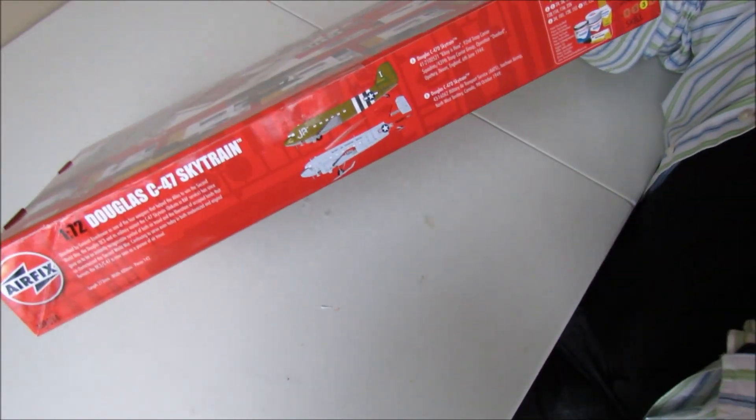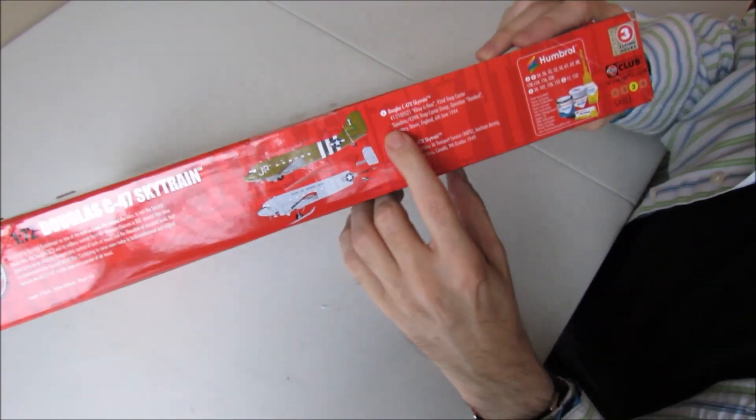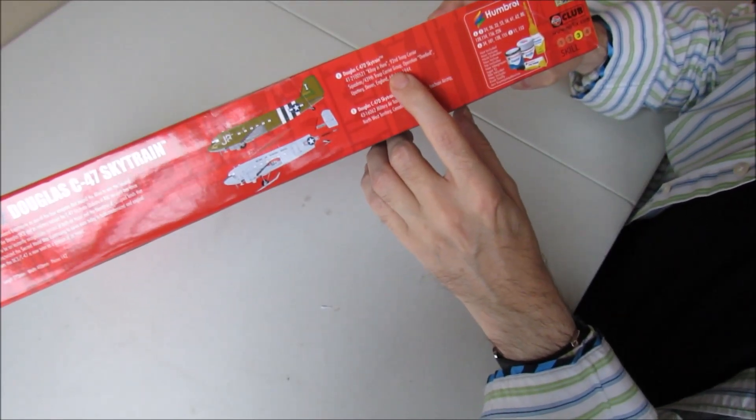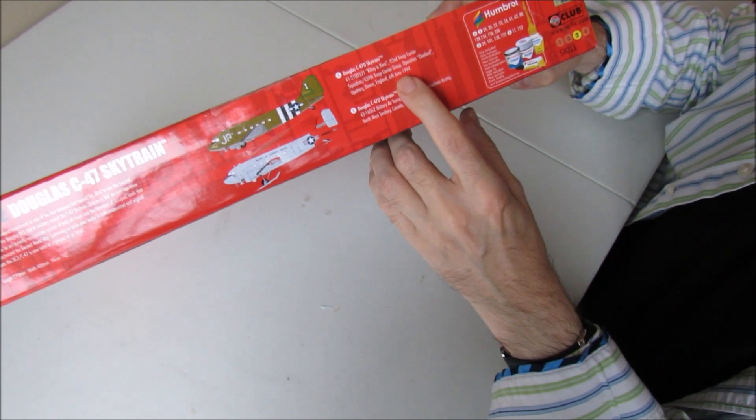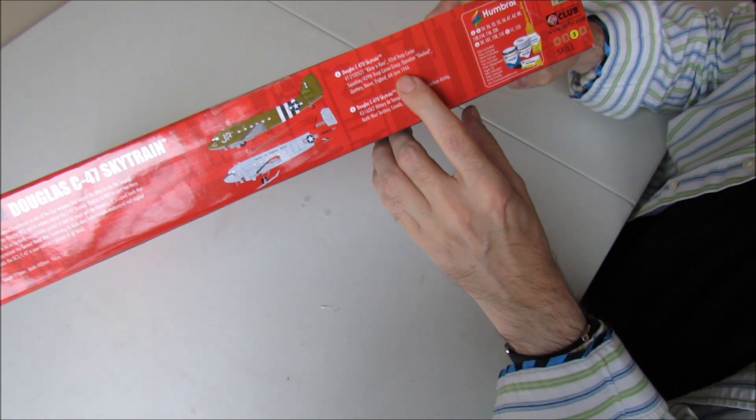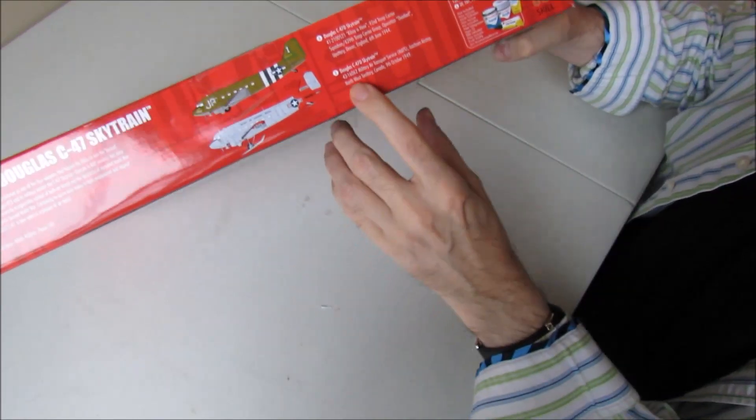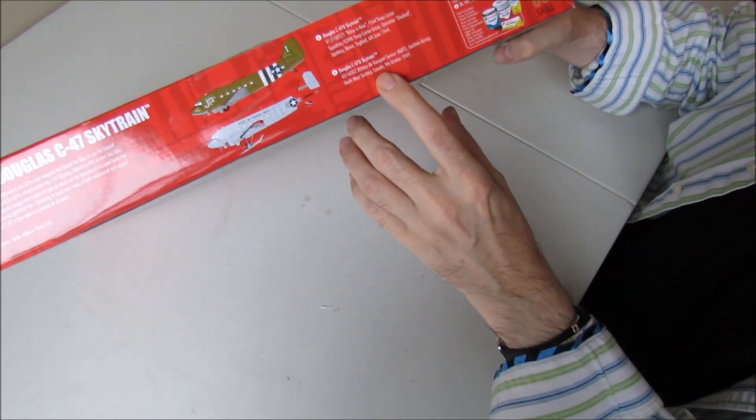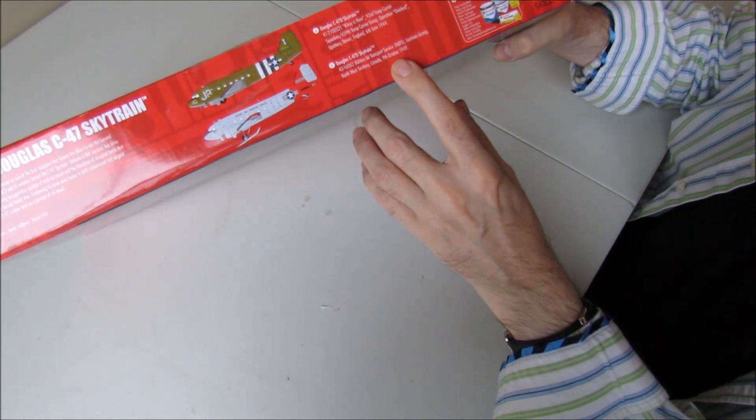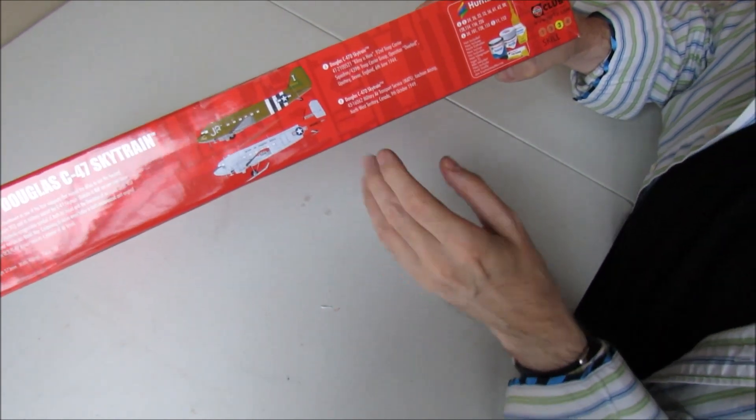One version, the D-Day version, is the Noszok Kilroy's Ear from the 92nd Troop Carrier Squadron, 439th Troop Carrier Group, Operation Overlord. Flew from Upottery in Devon, England on the 6th of June 1944. The second option is Military Air Transport Service MATS, and that was based at Isaacson Airstrip, Northwest Territory, Canada, 9th of October 1949. I'll be doing the D-Day version, obviously.